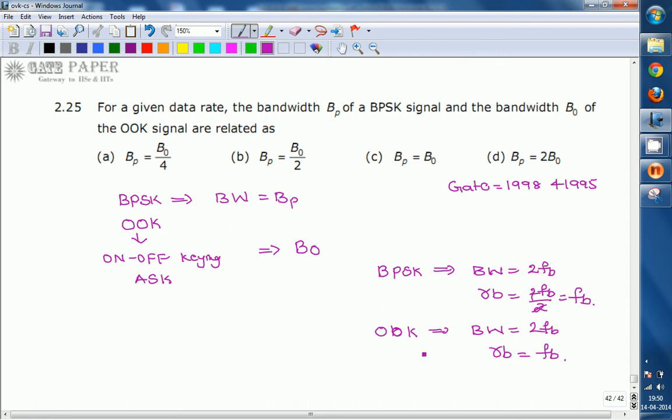Now the relation between Bp and B0 is that Bp equals B0. Both the bandwidths are the same, and with respect to signaling rate, the data rates are also the same. Therefore, Bp equals B0. The answer is C.